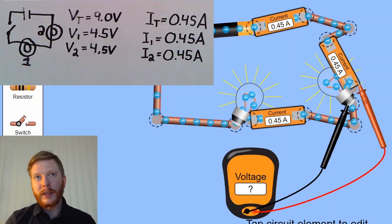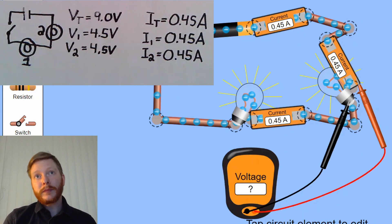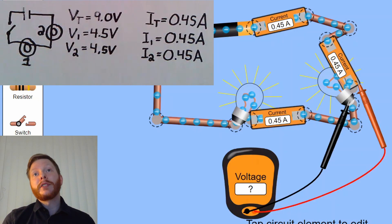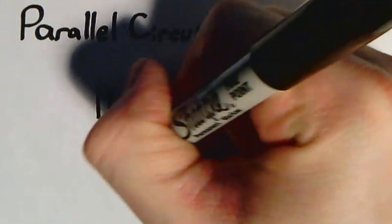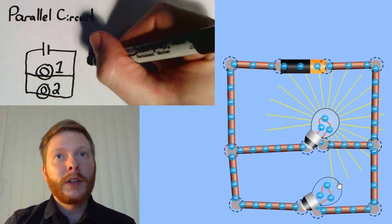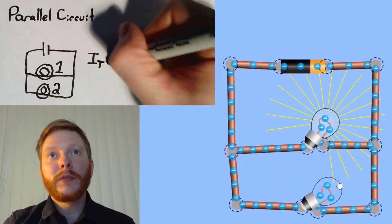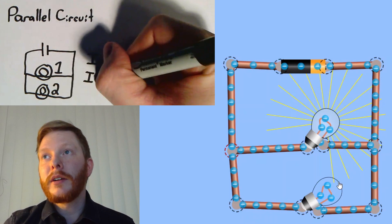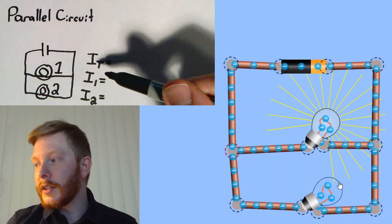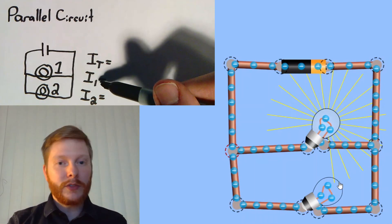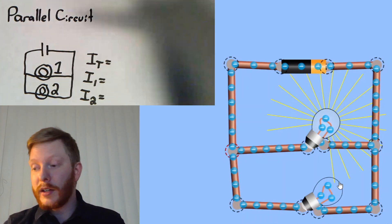So the total voltage is 9V, and the two bulbs are 4.5V each — those add up to nine. In a series circuit, voltages across devices add up to the total, while the current stays the same everywhere. Try the worksheet to see what happens with three light bulbs. Now we're going to quickly build a parallel circuit with two light bulbs and collect voltage and current data for that.